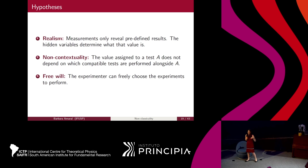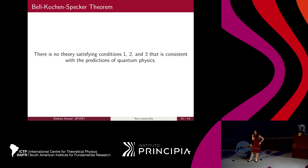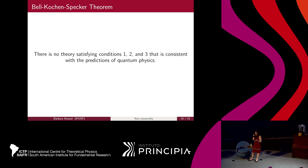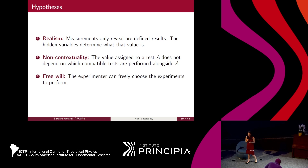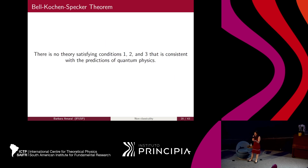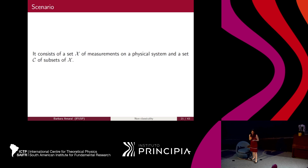We translate these hypotheses into a mathematical condition. The Kochen-Specker theorem is the result showing that no theory satisfying conditions 1, 2, and 3 is consistent with the predictions of quantum physics. This result was derived 50 or 60 years ago by Kochen and Specker. For them, the non-contextuality hypothesis was so natural they didn't even discuss it — they just assumed it. Then Bell was the one to see that if you remove that assumption, you could find theories consistent with quantum physics predictions.